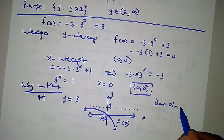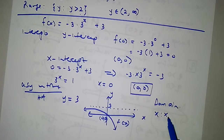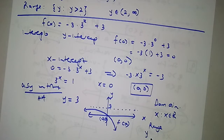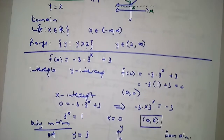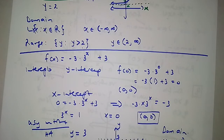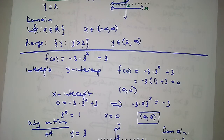The domain — x is an element of real numbers. The range is y less than 3, since the asymptote at y equals 3 cannot be included. This is the range of this graph. It has no axis of symmetry. If you do not understand, please do not be shy to comment below or email me — I can help you work through this. Stay blessed and have a fantastic day.